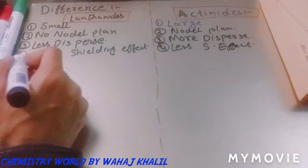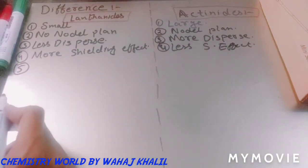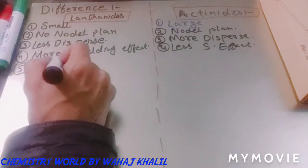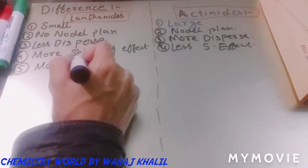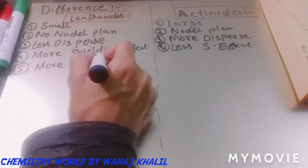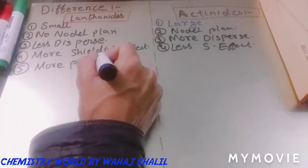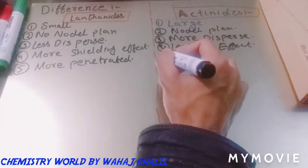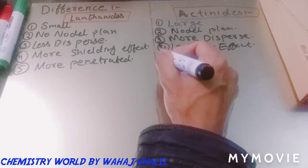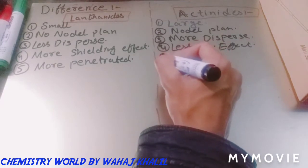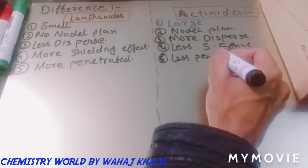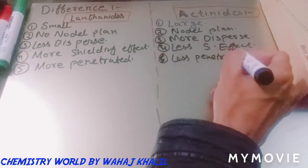Fifth point: lanthanides are more penetrated, while actinides are less penetrated.